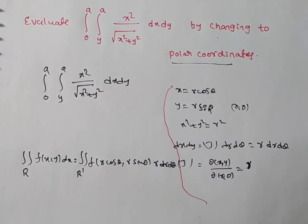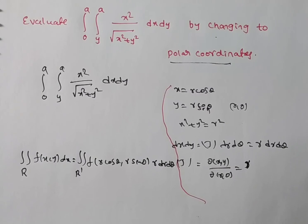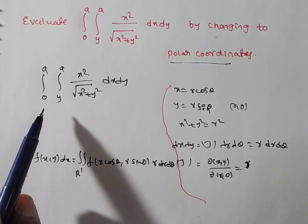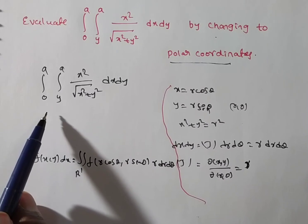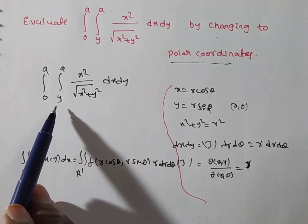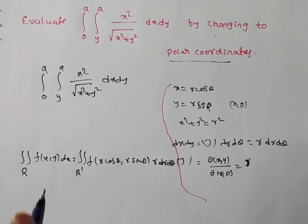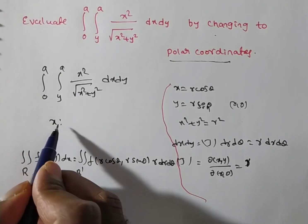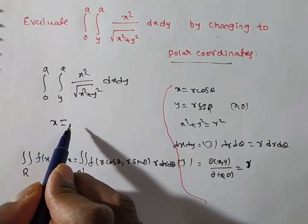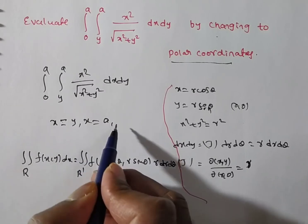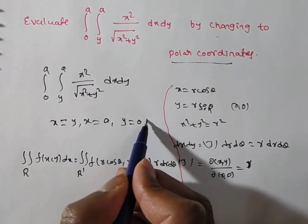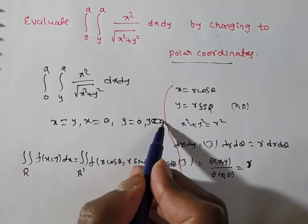Next, we need to find out the limits of r and θ based on the region. The integration limits given are: x limits from y to a (which are functions of y), and y limits from 0 to a.